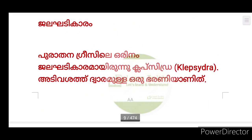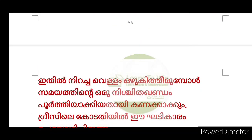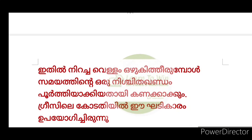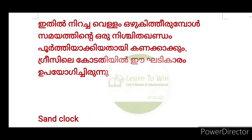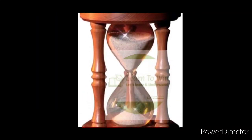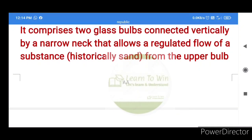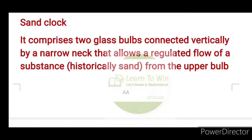For example, the clepsydra in Greece is one of the most important ancient timekeeping devices. The sandglass is another instrument. It comprises two glass bulbs connected vertically by a narrow neck, which allows a regulated flow of sand from the upper bulb to the lower one.